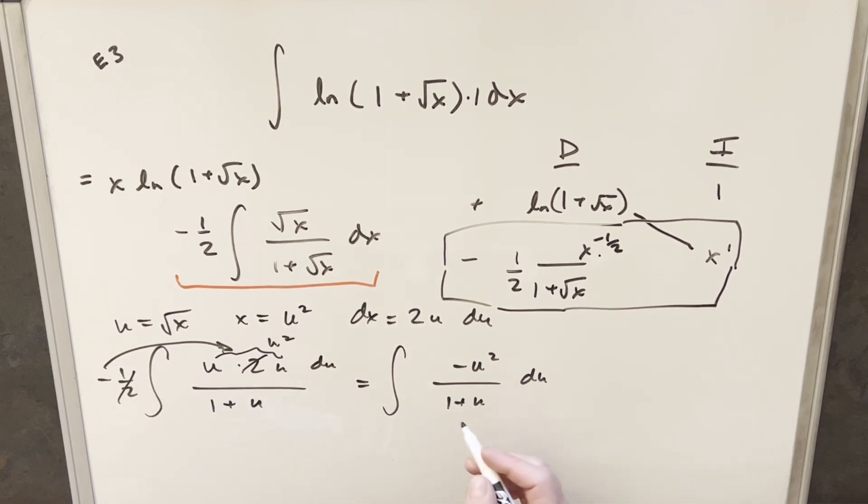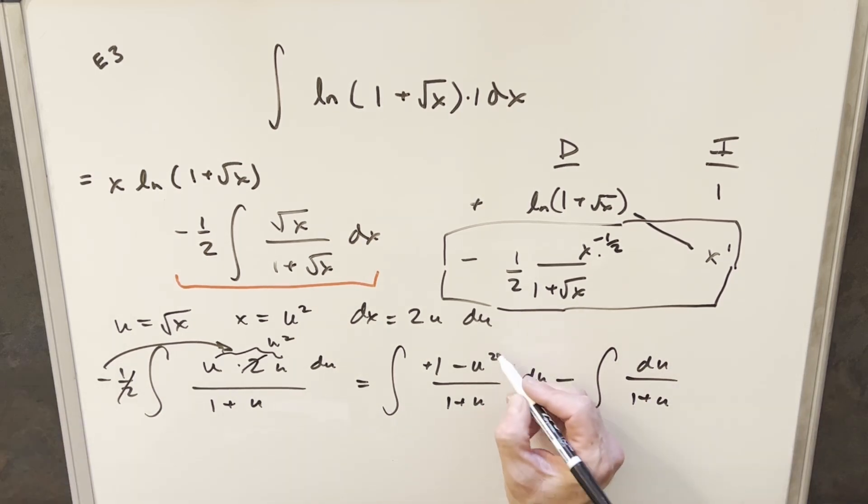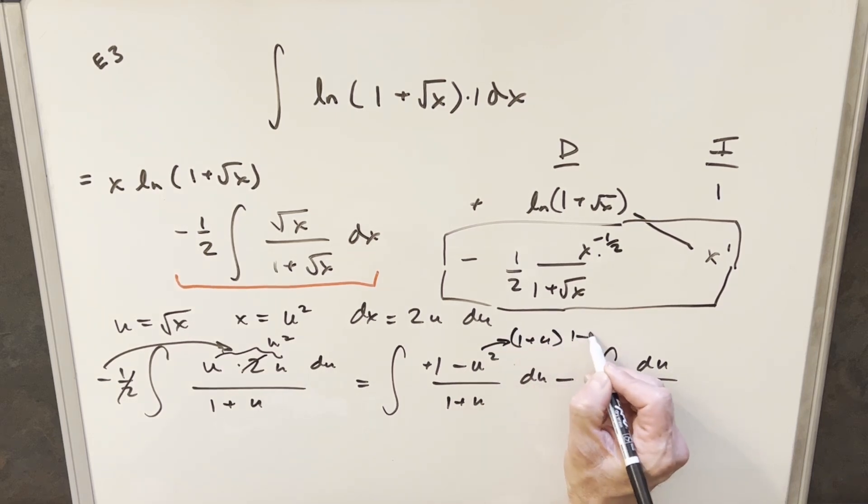And of course, we could do long division or something. But just to simplify this, I think what I'm going to do is I'm going to add a one right here. But then I need to subtract a one, so I'm not changing it. But if we do that, let's take this minus one and we'll make that a separate integral. So over here, I'll be subtracting just du over one plus u. And the reason I did this here is what I want to do is I want to factor this as one plus u times one minus u in order to get some cancellations.